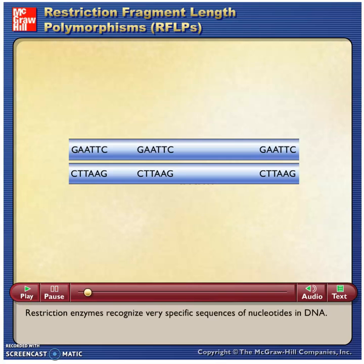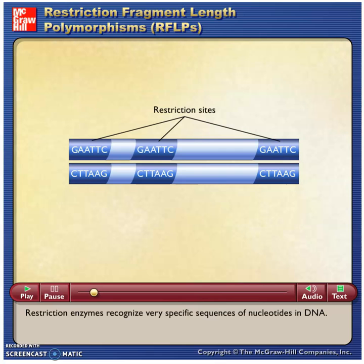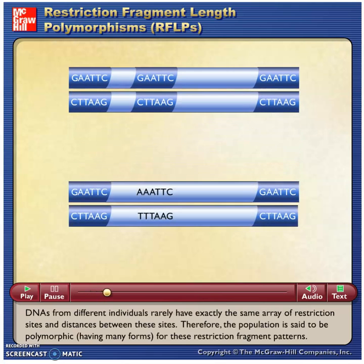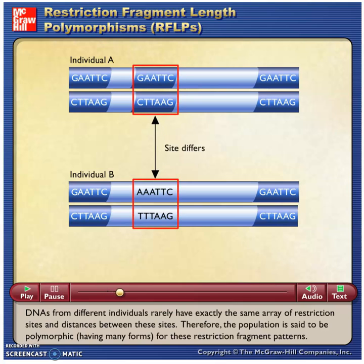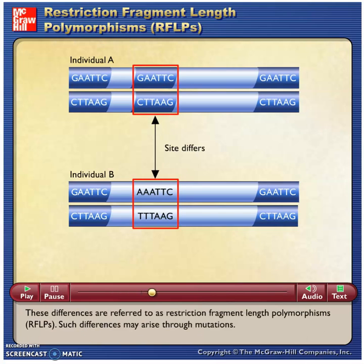Restriction enzymes recognize very specific sequences of nucleotides in DNA. DNAs from different individuals rarely have exactly the same array of restriction sites and distances between these sites. Therefore, the population is said to be polymorphic, having many forms for these restriction fragment patterns. These differences are referred to as Restriction Fragment Length Polymorphisms. Such differences may arise through mutations.